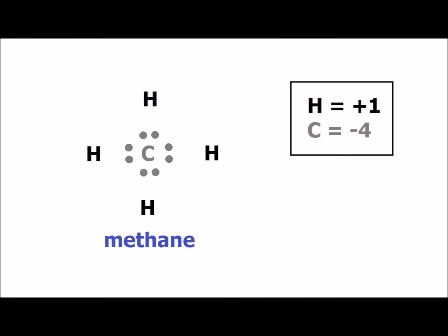Since carbon started with 4 electrons and it now has 8, effectively it has gained a minus 4 charge, so it has an oxidation number of minus 4.